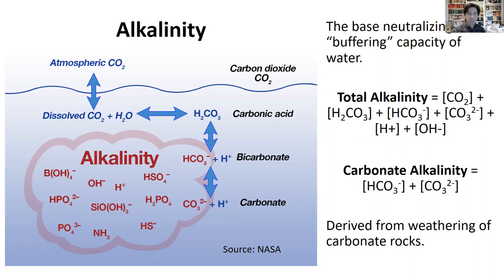The diagram here from a NASA graphic shows the cycling of different dissolved species in a lake and how we actually get some of those materials. We can get CO2 from the atmosphere, which mixes with water to form carbonic acid. We also have ionic species coming from the process of chemical weathering on land, which then contributes those ions into solution in the lake.